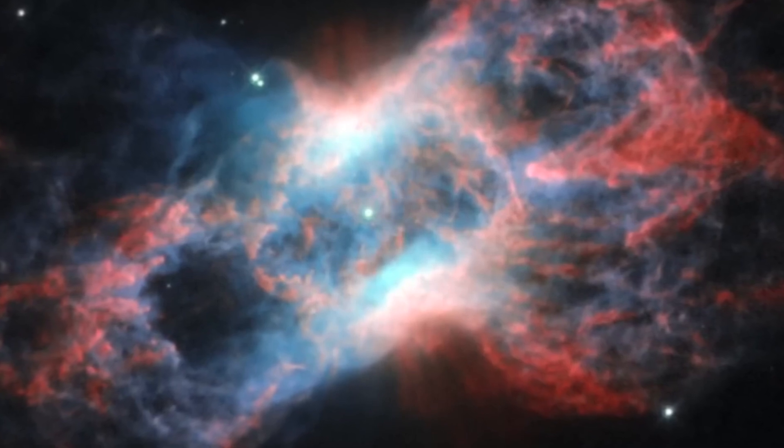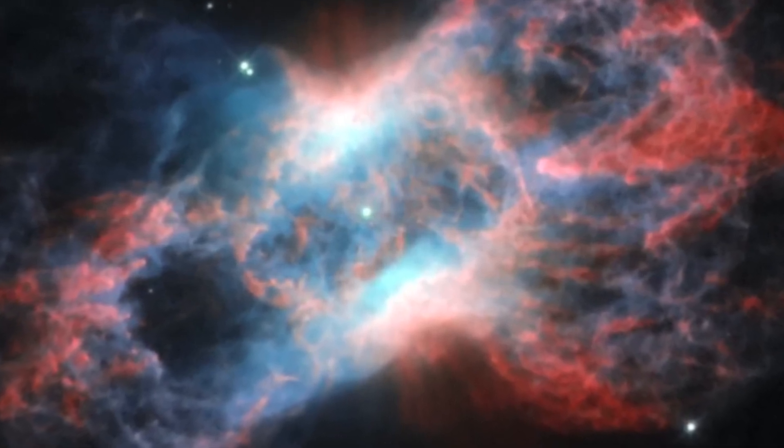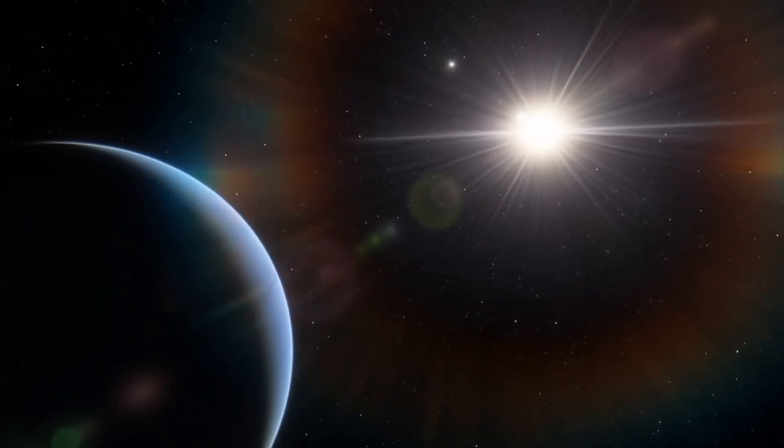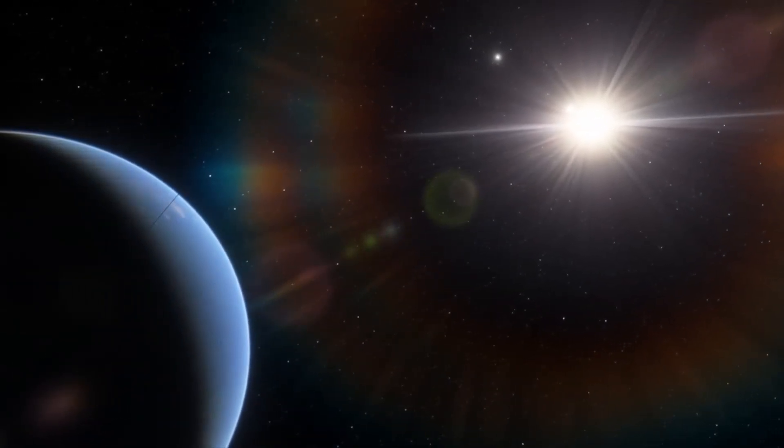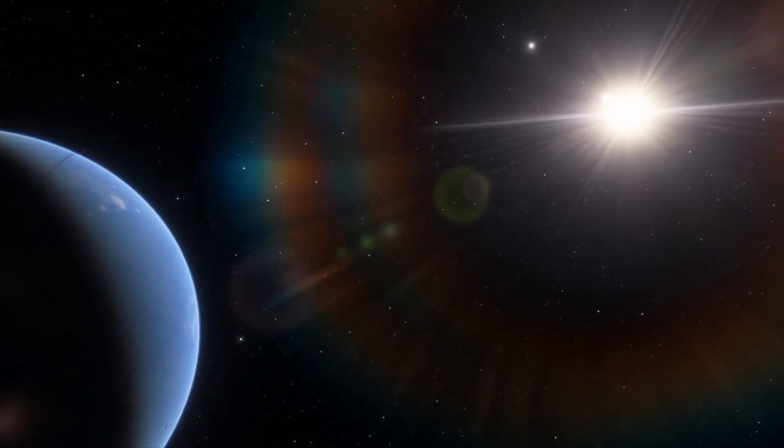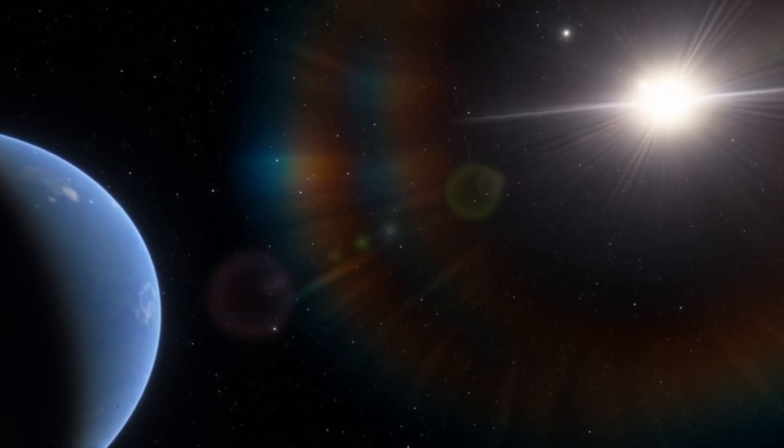This high-energy radiation has the ability to catalyze the removal of oxygen from the ozone layer that protects the Earth. Without the ozone layer, life on Earth's surface would be exposed to the full force of the sun's ultraviolet radiation, which could result in an extinction event.